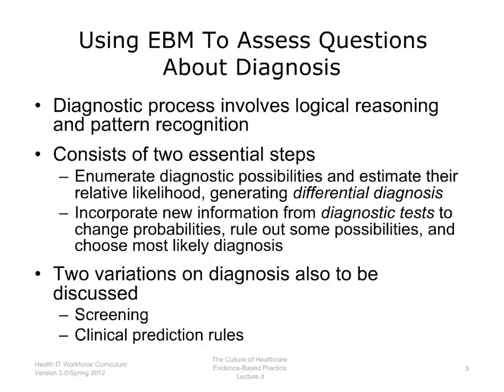Pattern recognition is the ability to look at the patterns that we commonly see in various diseases. The diagnostic process actually has two essential steps. Before we can begin talking about diagnostic tests, we have to enumerate all the diagnostic possibilities and estimate their likelihood. Diagnostic decision support systems generate a differential diagnosis, not only of the possibilities, but of the likelihood of each possibility. The second step is to incorporate new information from diagnostic tests that affect the probabilities for different items of the differential diagnosis. We can then rule out some possibilities and choose the most likely diagnosis.